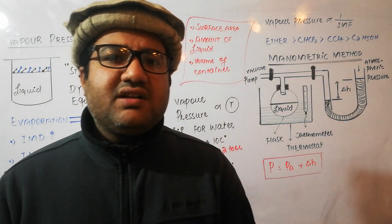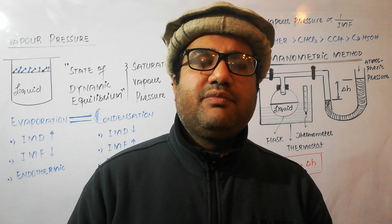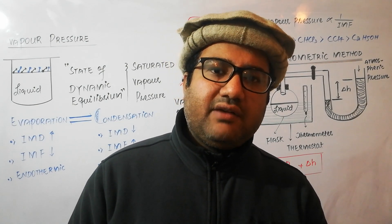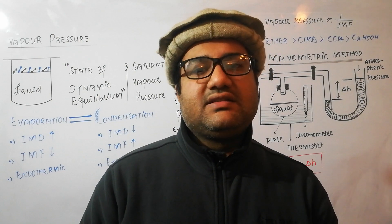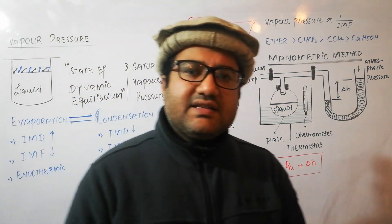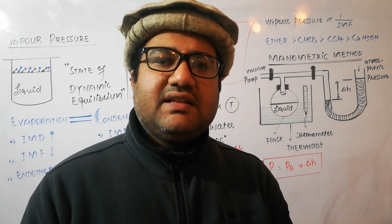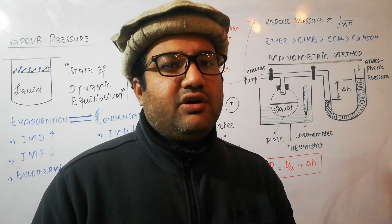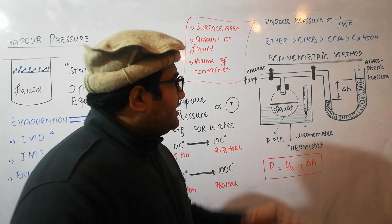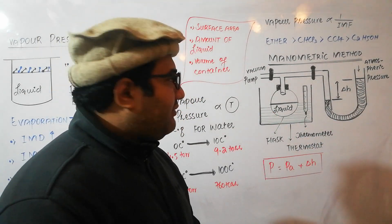There are many methods for measuring the vapor pressure of a liquid, but one of the most important and accurate is the manometric method. It is called the manometric method because a manometer is the instrument used in it to measure the vapor pressure. This is a schematic diagram of the manometric method.